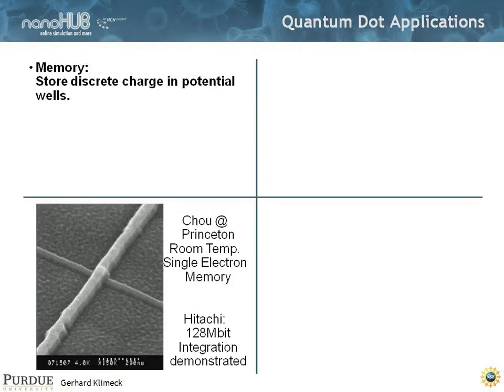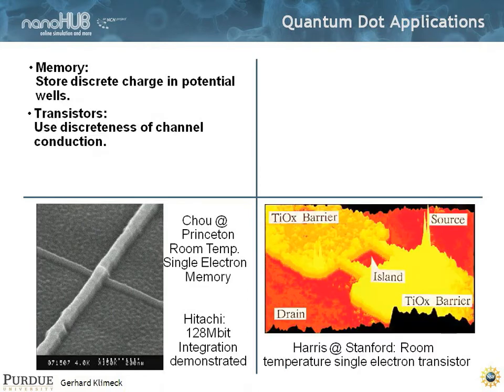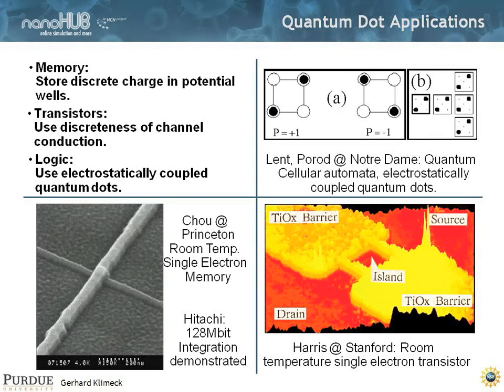Why would you do some of this? You might want to build memory devices, single electron memory. You might want to build transistors and single electron transistors. Or you might even do computing architectures like QCA type devices, quantum cellular automaton type devices.